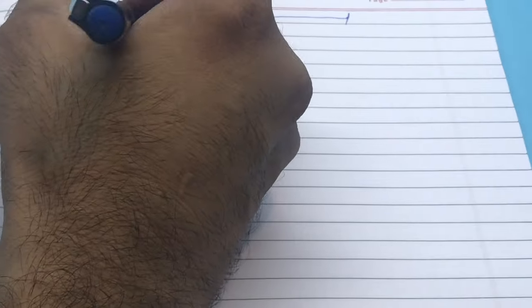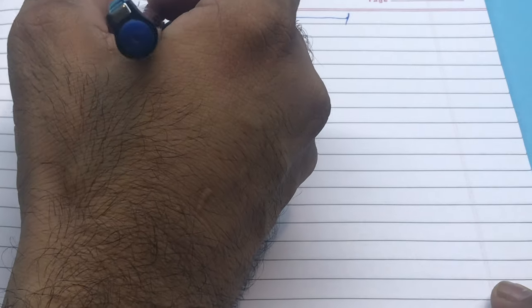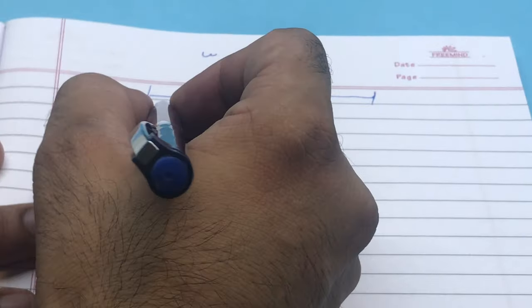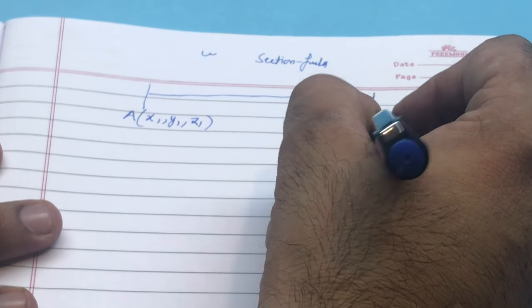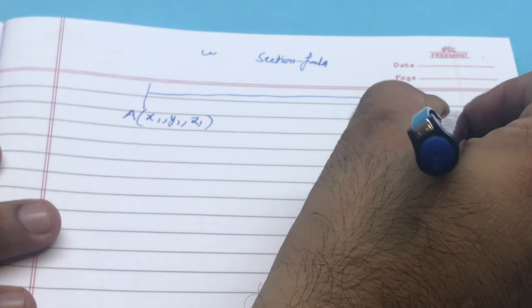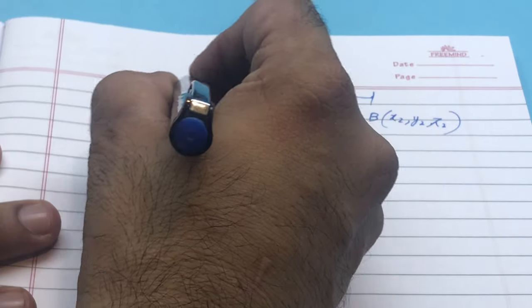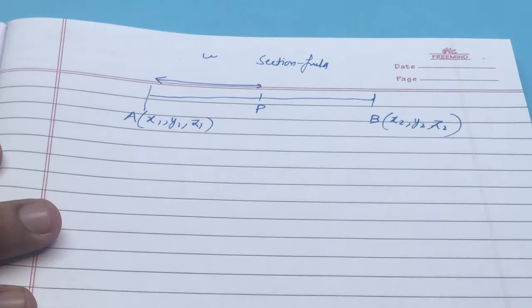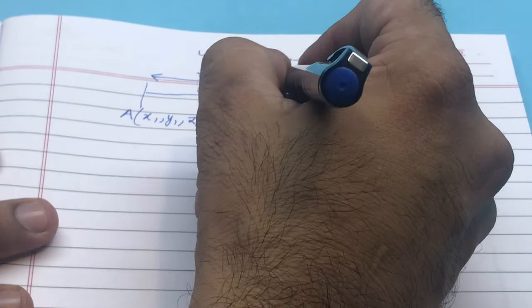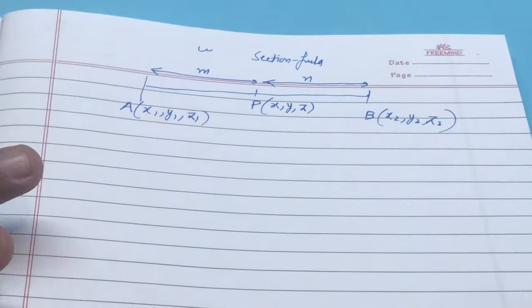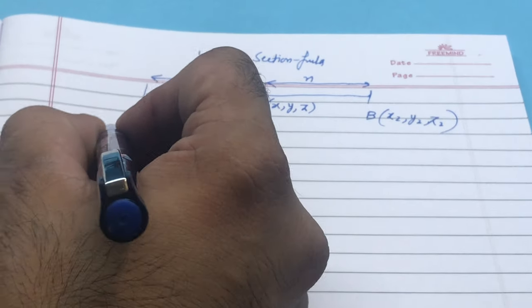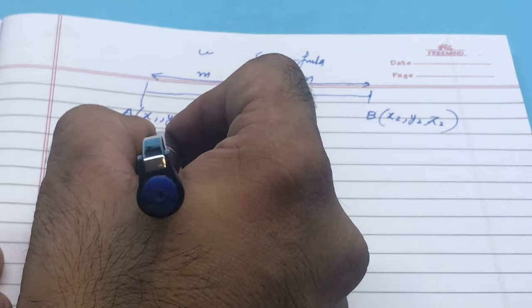Good afternoon. Today we are doing Exercise 12.3, Class 11th Mathematics, based on the Section Formula. A line segment AB has two points: A is at (x1, y1, z1) and B is at (x2, y2, z2). There is another point P which divides the line segment in ratio m:n. We will find the coordinates of P using the 3D section formula, which introduces the z-coordinate.